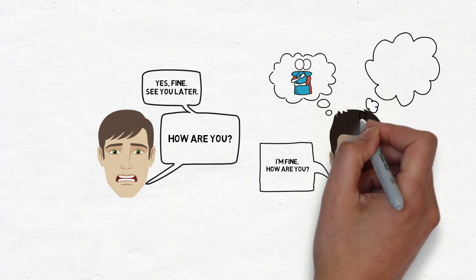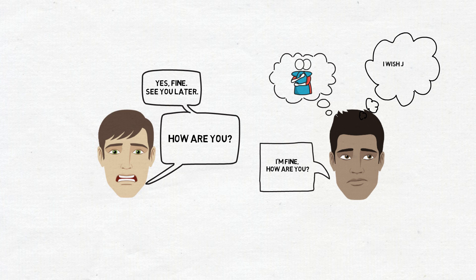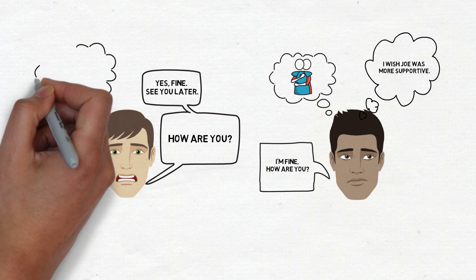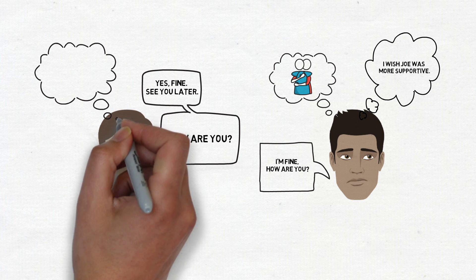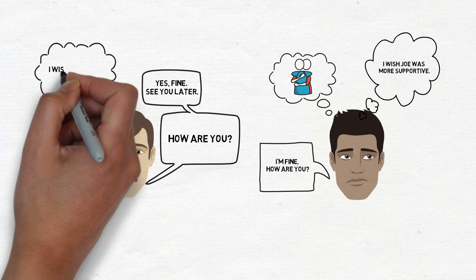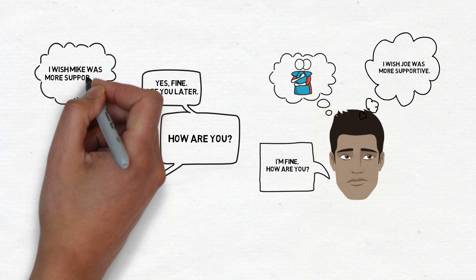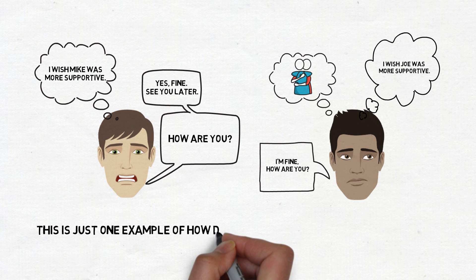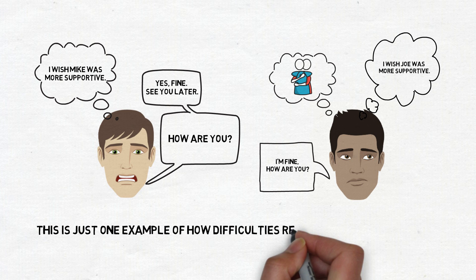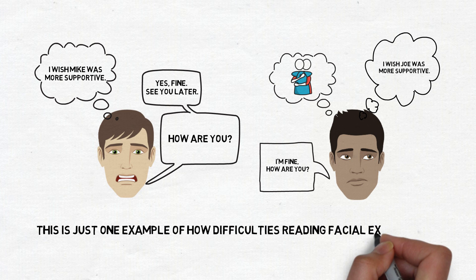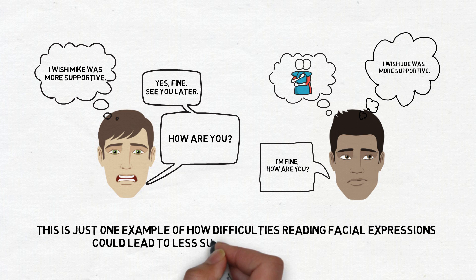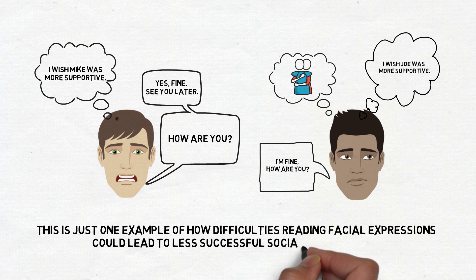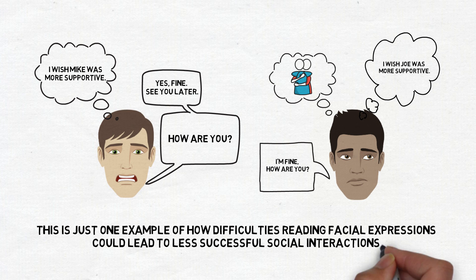Since Joe and Mike struggle to read each other's expressions, they don't realise that the other person is sad. As a result, they don't support or comfort each other and are left feeling a little bit let down by the other person. This is just one basic example of how difficulties reading someone's facial expression could lead to responses that are not socially advantageous.